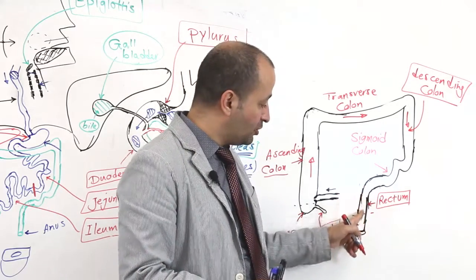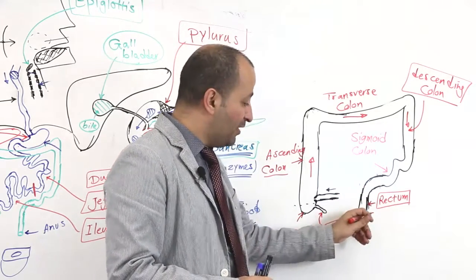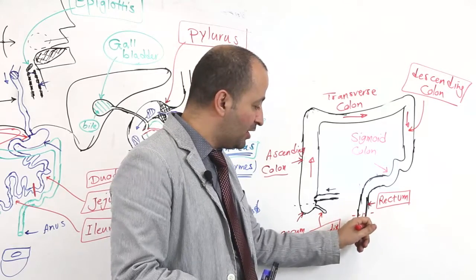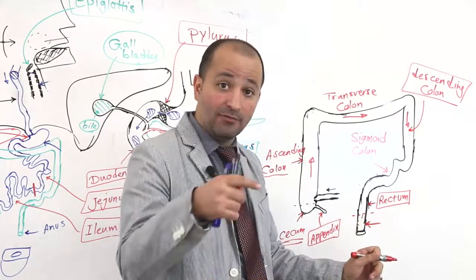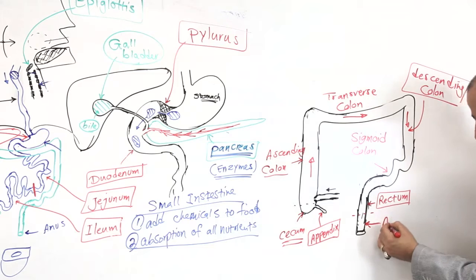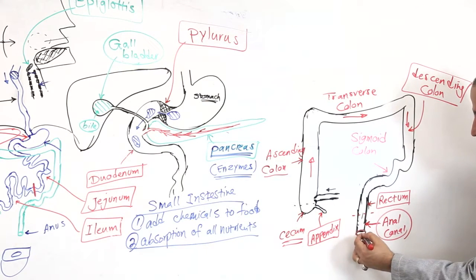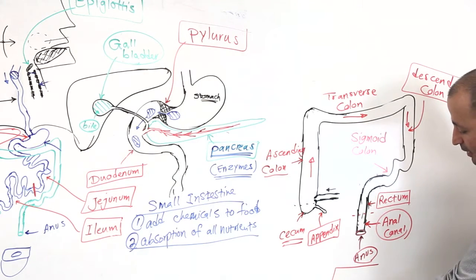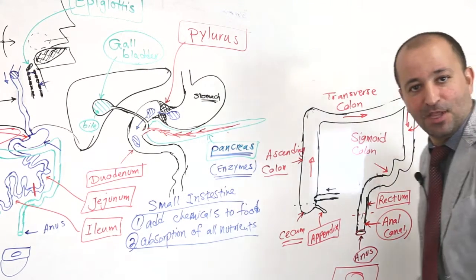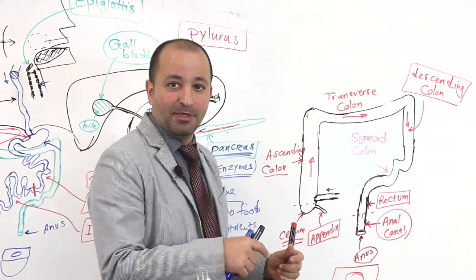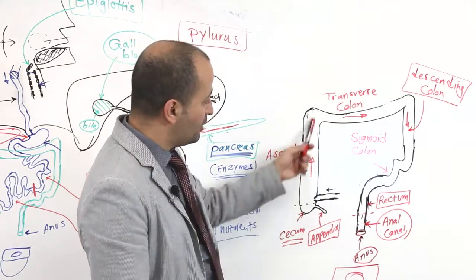So this part of large intestine is rectum going down. And then in the middle changes to something else. We call it anal canal. They call it anal canal. And anal canal ends to anus. And then obviously the toilet. So we have these parts in the large intestine.